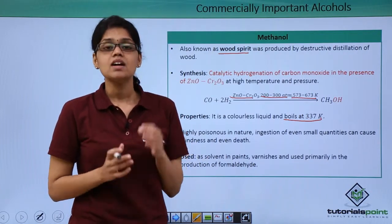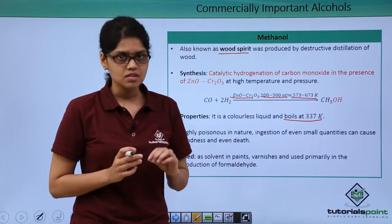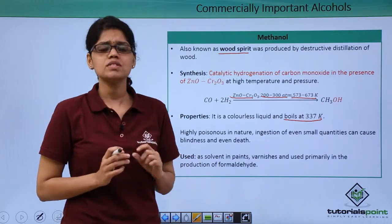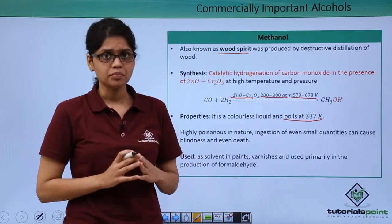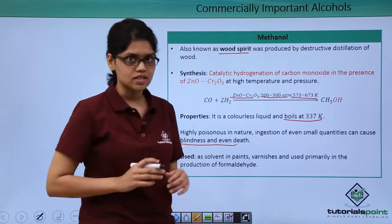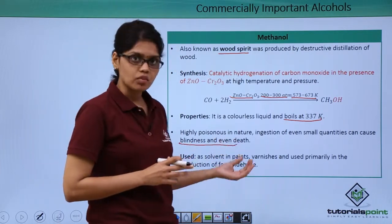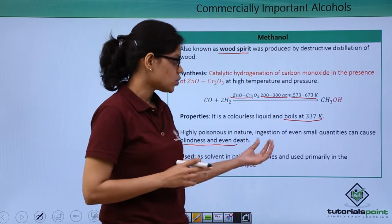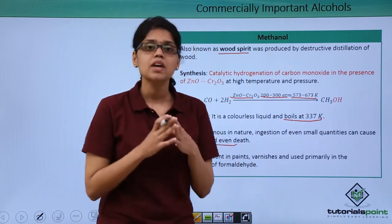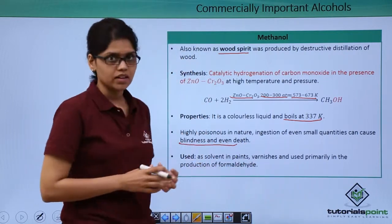It is very important to note that methanol is a highly poisonous substance and its ingestion in even small amounts can be fatal. It can result in blindness and even cause death. Methanol is mainly used as a solvent in paints, varnish, and also used primarily in the synthesis of formaldehyde.